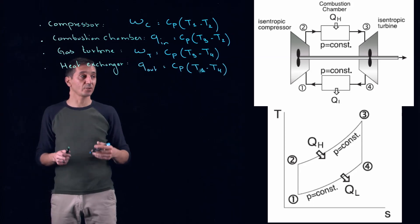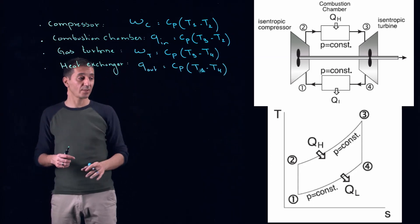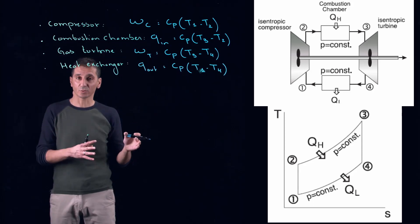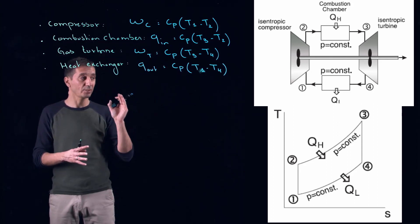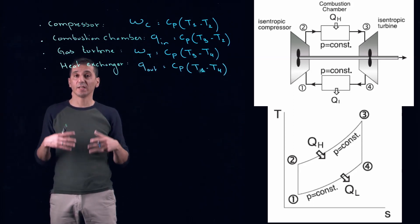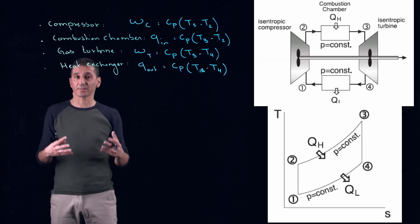The next step is then to use this. At the same time, remember that we can use our isentropic relations between 1 and 2 and 3 and 4. And the game will be to derive an expression for the thermal efficiency for Brayton cycle.